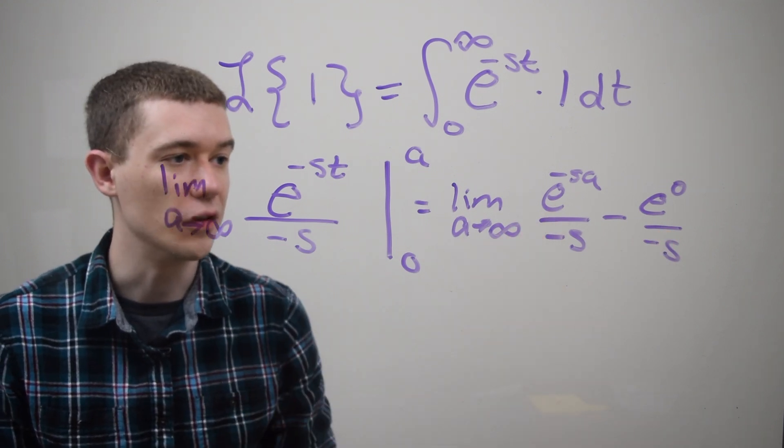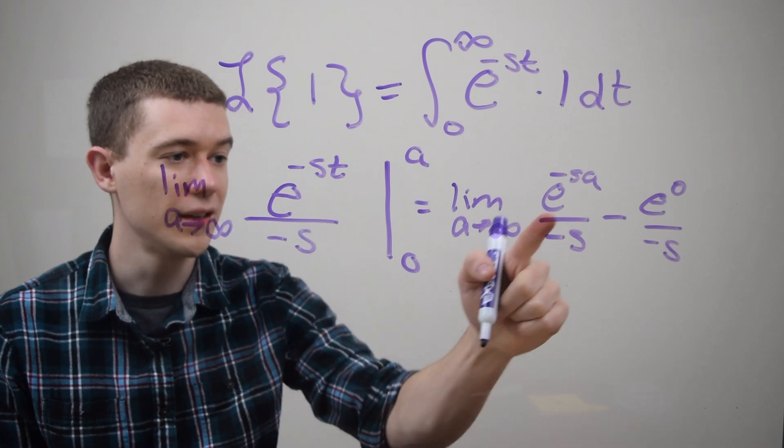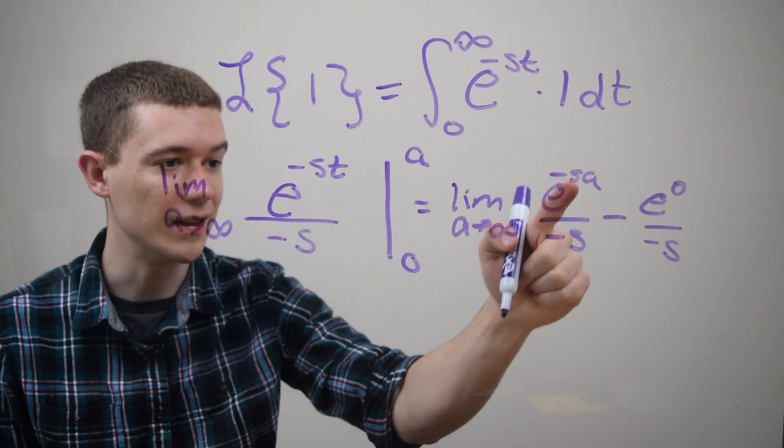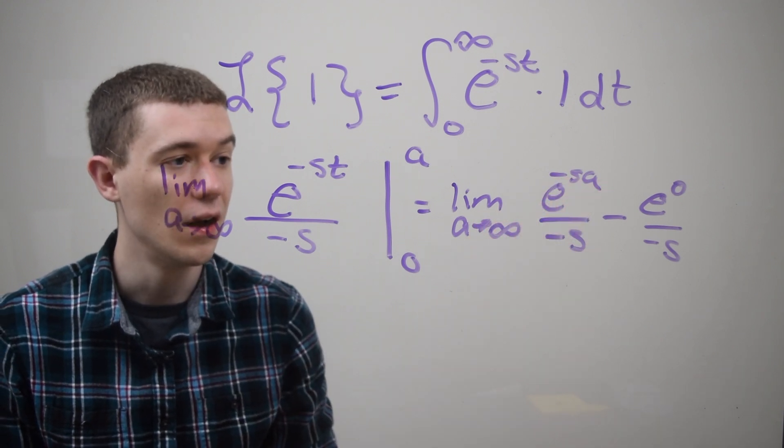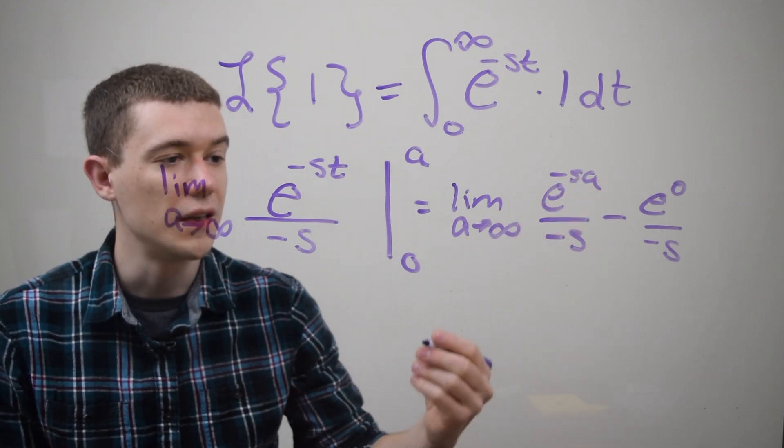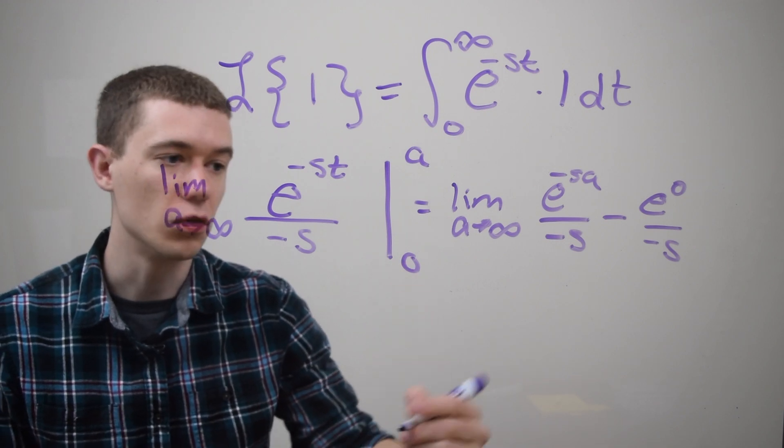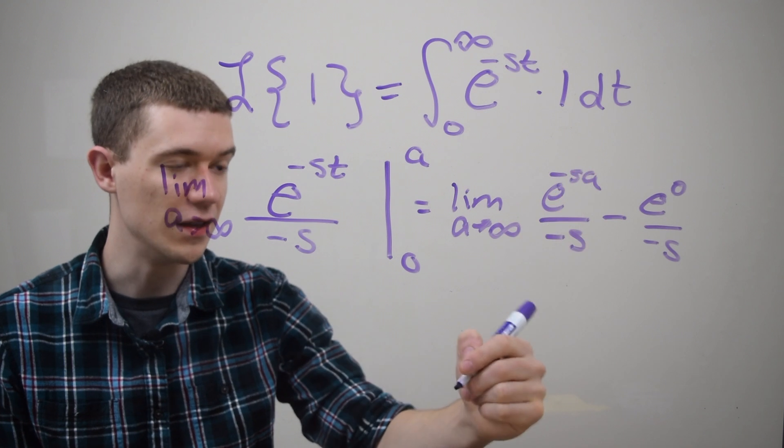Well what happens as a goes to infinity? Well this numerator would tend toward e to the minus s times infinity. So to get the Laplace transform that you want, you want this to be a convergent integral, this piece is going to need to go to 0.